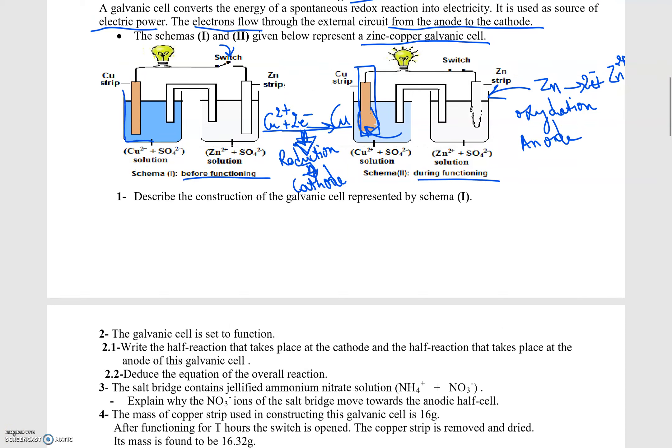We have two beakers. The first beaker contains the solution of copper ions, and in it is placed a copper strip. The second beaker is the solution of Zn²⁺ ions with a Zn strip. The two beakers are connected by the salt bridge, and the two strips are connected with electric wires and a light bulb.